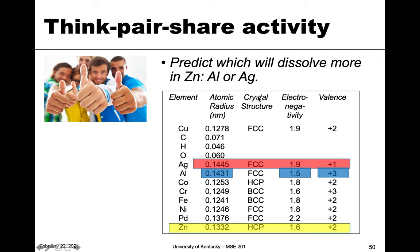The next rule was crystal structure. Zinc has HCP, and both aluminum and silver are FCC. So neither of them wins that criteria — we'll call it a draw.